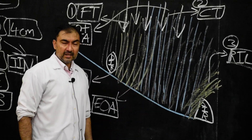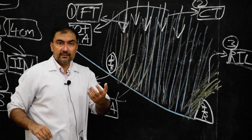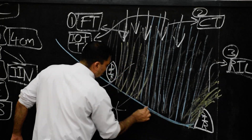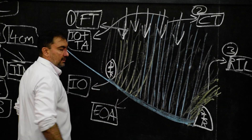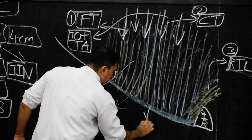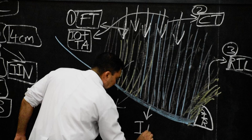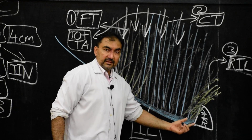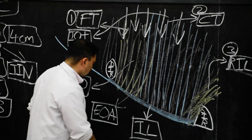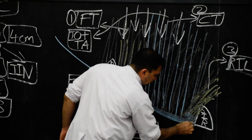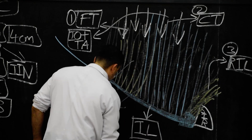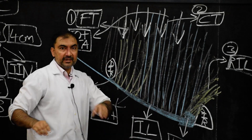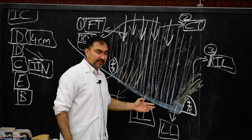Now we come to the floor. The floor is formed by the grooved upper surface of the inguinal ligament. Here we shall mark the floor as the grooved upper surface of the inguinal ligament. And medially, there will also be the presence of the lacunar ligament in the floor. So in the floor there are two structures: the grooved upper surface of the inguinal ligament and, medially, the lacunar ligament.